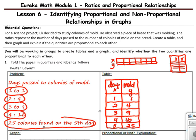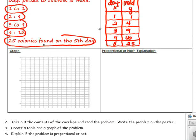Next, we are going to graph the data. So we have our x-axis and our y-axis. And our x-axis is the number of days, and the y-axis represents the colonies of mold.